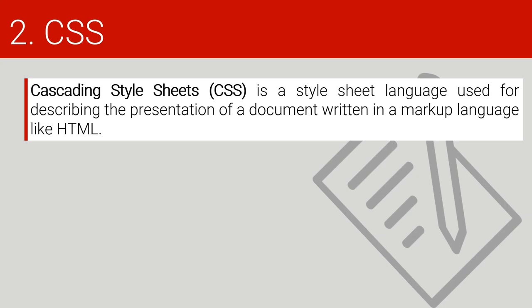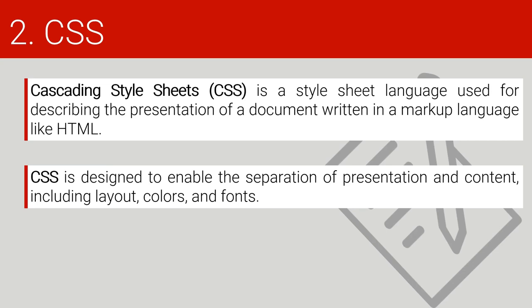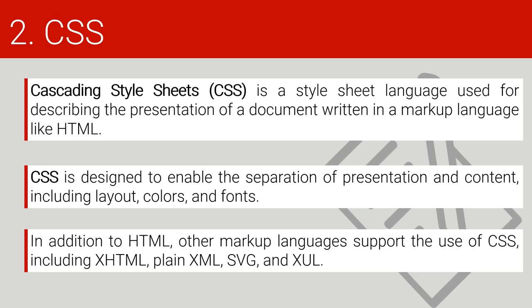CSS stands for Cascading Style Sheets. It is a style sheet language used for describing the presentation of a document written in a markup language such as HTML. We use CSS to describe how the HTML should look. CSS is designed to enable separation of representation and content, including the layouts, colors, and fonts. We could separate the design from the content. CSS has that power — you can separate it aside when you don't want it, and implement it when you do.